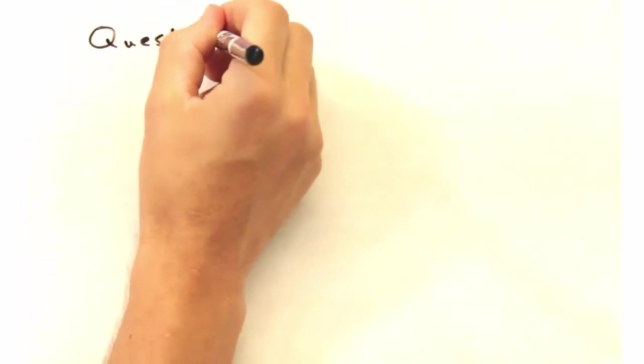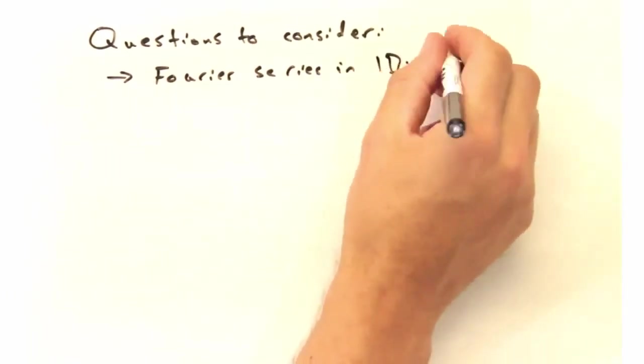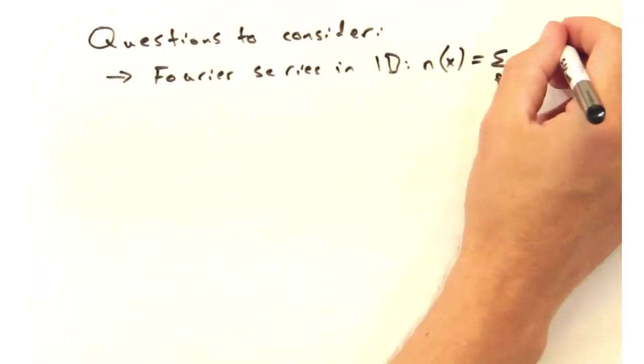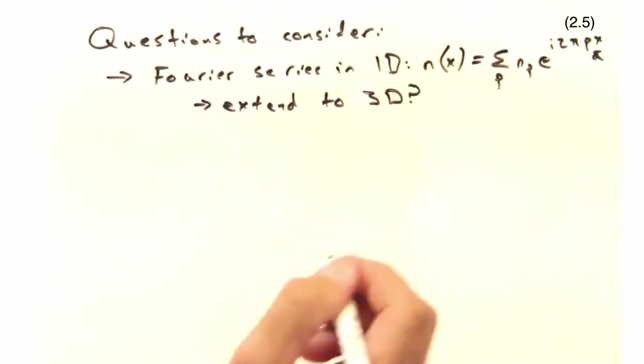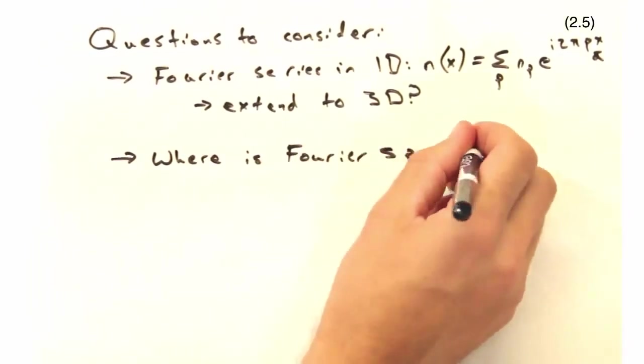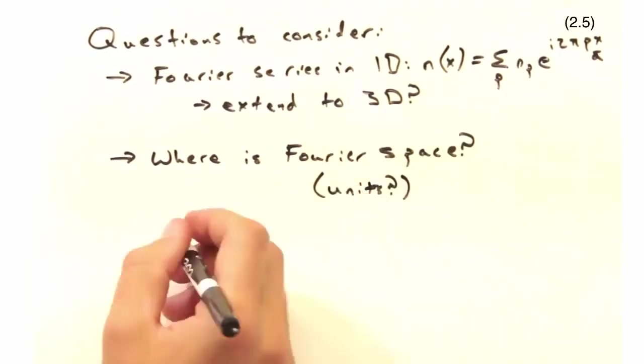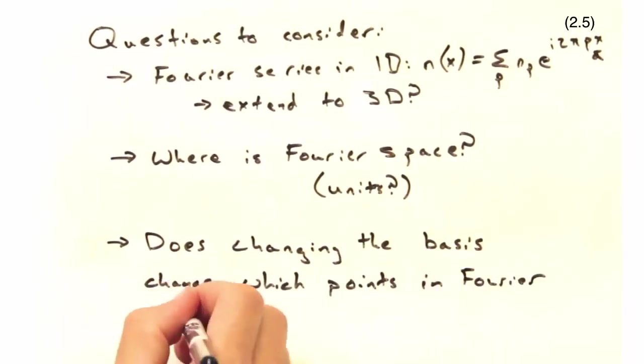As always, here are some questions to consider at home. First, we gave you what the Fourier series looks like in 1D. How would you extend equation 3.5 to a crystal with three dimensions? Second, where is this Fourier space? It might help to think about units in this case. Third, does changing the basis change which terms in the Fourier series are allowed?